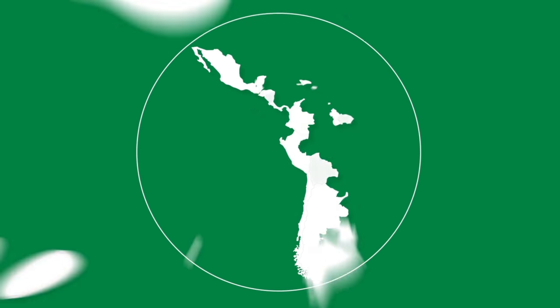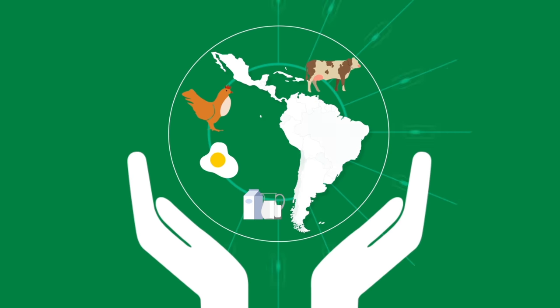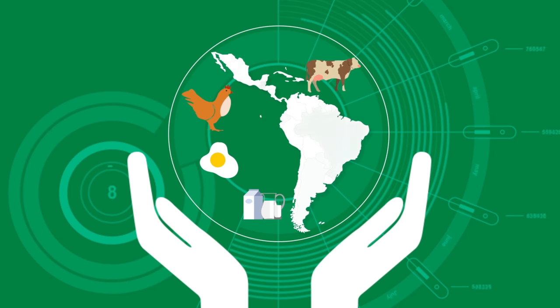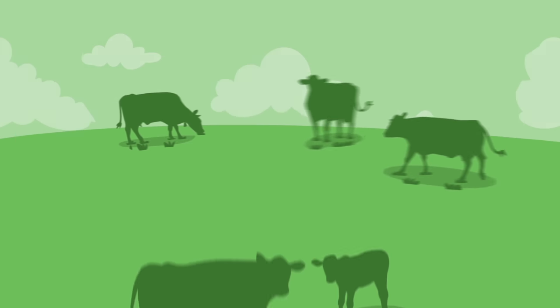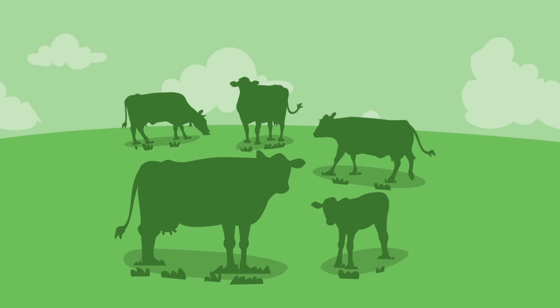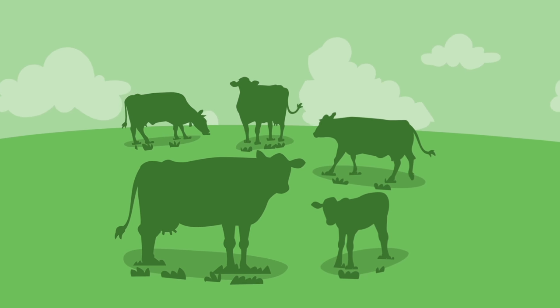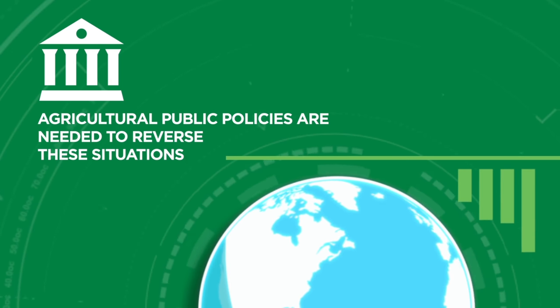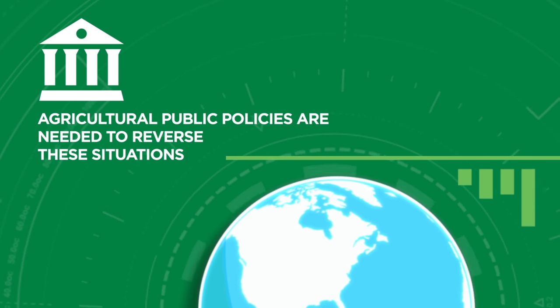These decisions affect issues ranging from food security — which means the availability, access, and consumption of healthy and nutritional food — to the amount of greenhouse gas emissions in the atmosphere. In other words, agricultural public policies are needed to reverse these situations.